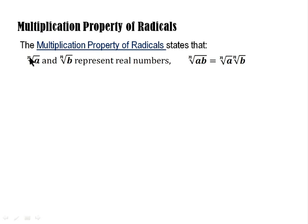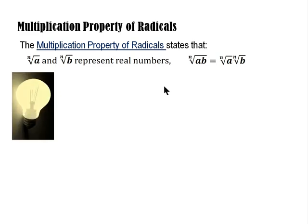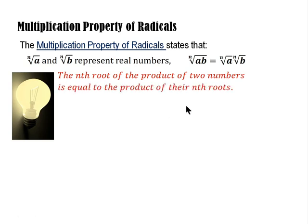In other words, the n-th root of the product of two numbers a and b is equal to the product of their individual n-th roots. Let's look at an example.